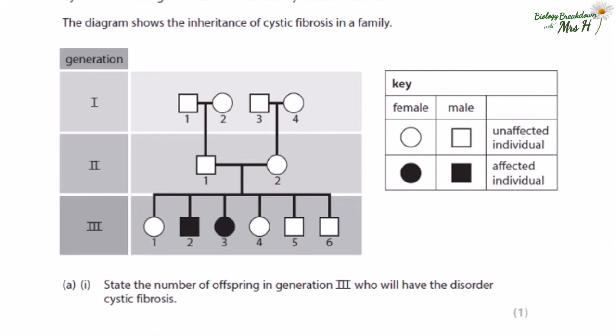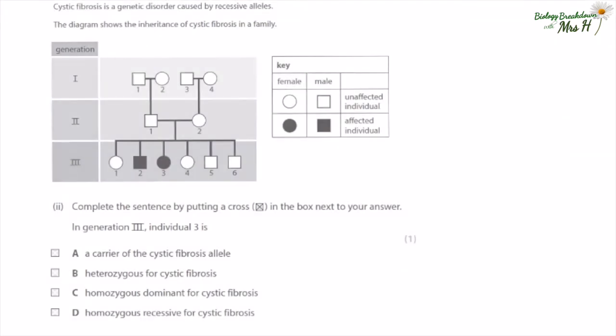Cystic fibrosis is a genetic disorder caused by recessive alleles. The diagram shows the inheritance of cystic fibrosis in a family — these diagrams are also known as pedigree analysis. State the number of offspring in generation three who will have the disorder. Looking at the key, an affected individual has cystic fibrosis. In generation three, individuals number two and three are affected, making two individuals in total. Individual three is homozygous recessive for cystic fibrosis, so the answer is homozygous recessive.